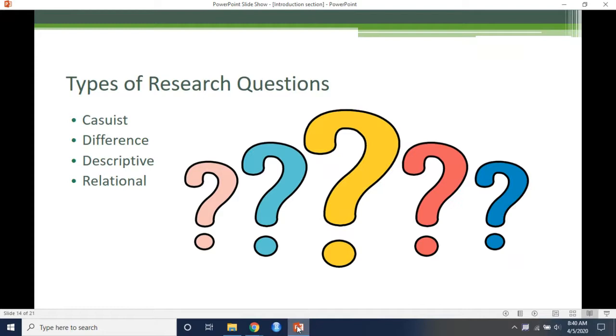Descriptive research problem typically asks the question, what is? The underlying purpose is to describe a situation, state, or existence of a specific phenomenon. Relational research problem suggests a relationship of some sort between two or more variables to be investigated. The underlying purpose is to investigate qualities, characteristics that are connected in some way.